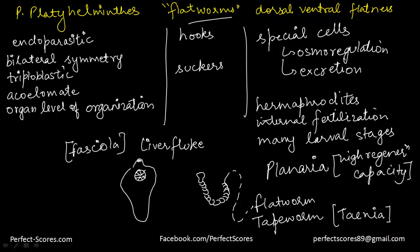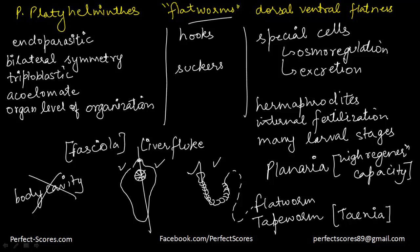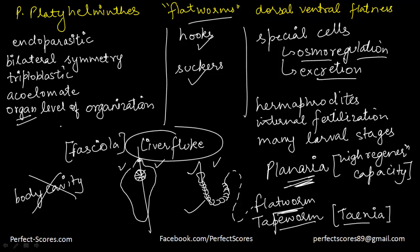To revise phylum Platyhelminthes: they are usually endoparasites, meaning they live within other bodies. They have bilateral symmetry — if you cut it, both halves look the same. They are triploblastic and acoelomate, meaning the coelom is not present. The level of organization is organs — no organ systems. The specialized organs are hooks and suckers for deriving nutrition. There are special cells for osmoregulation and excretion. They are hermaphrodites, fertilization is internal, and development takes place through many larval stages. Examples include Planaria — which has extremely high regeneration capacity — flatworms, tapeworm known as Taenia, and liver fluke known as Fasciola.